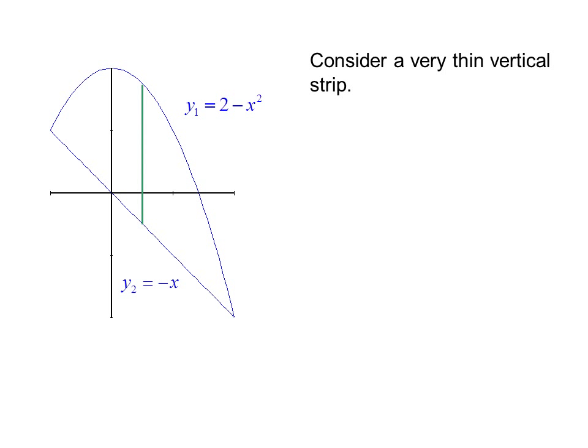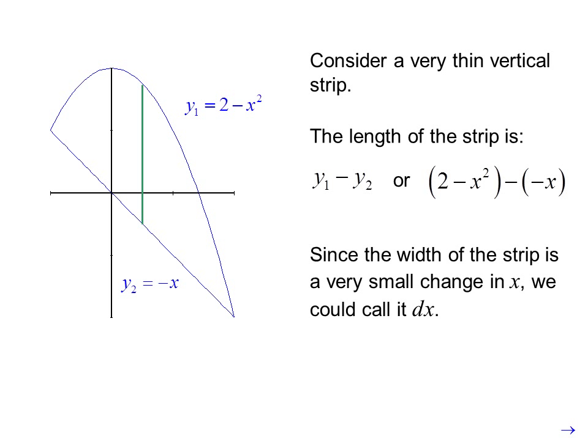Consider a very thin vertical strip. The length of the strip is y1 minus y2, or the quantity 2 minus x squared minus negative x. Since the width of the strip is a very small change in x, we could call it dx.